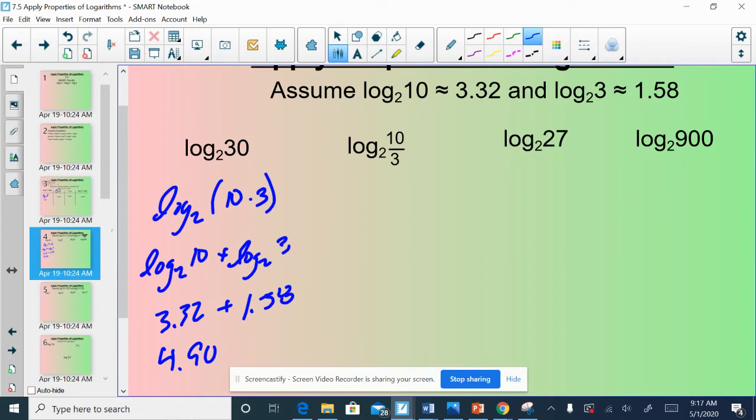We could continue this logic, do the exact same thing but with a different property. Log base 2 of 10 thirds. Well, that's clearly 10 divided by 3. So, I could expand this expression into log base 2 of 10, subtract log base 2 of 3. That's the quotient property at work. If they have the same log and they're being divided, we could each give them their own log and turn that into subtraction. Now, I just have to do 3.32 minus 1.58. And I would get 1.74.